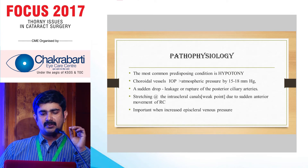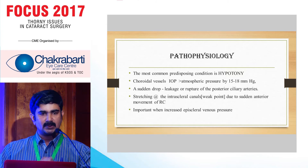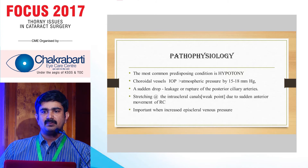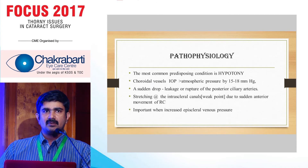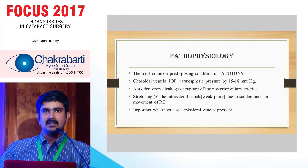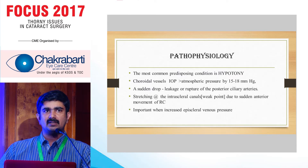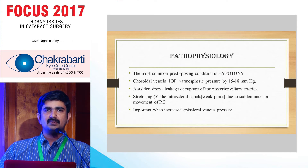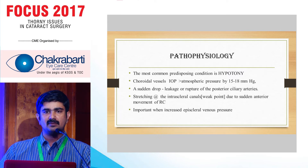The main cause is hypotony, where the choroidal vessels are at an IOP of 12 to 18 mmHg more than atmospheric pressure. A sudden drop in pressure inside the chamber causes the retino-choroidal complex to collapse more than the sclera, stretching the ciliary arteries. Rupture happens in the intrascleral canal where they are weakest, and bleeding occurs into the suprachoroidal space and sometimes into the suprascleral space, which is why you sometimes see blood coming through the subconjunctival space.